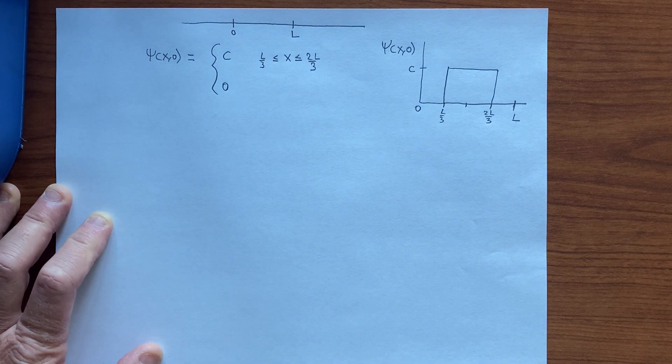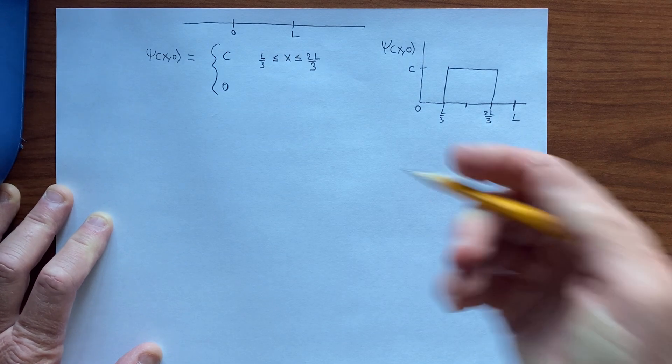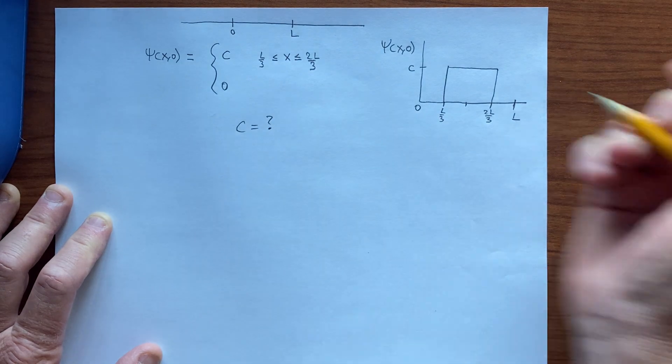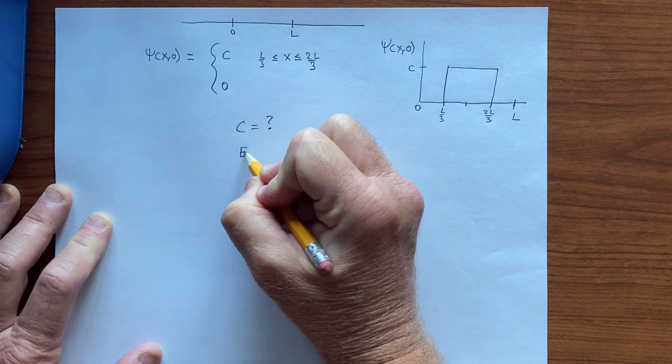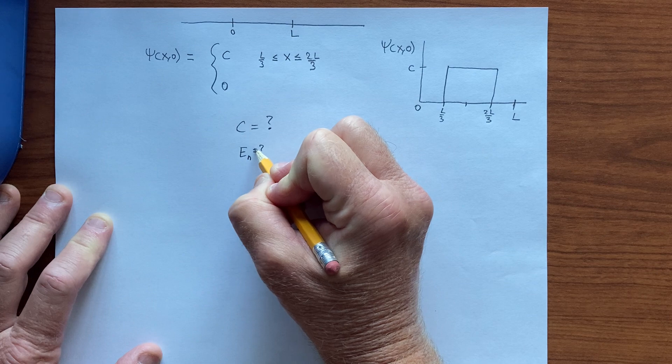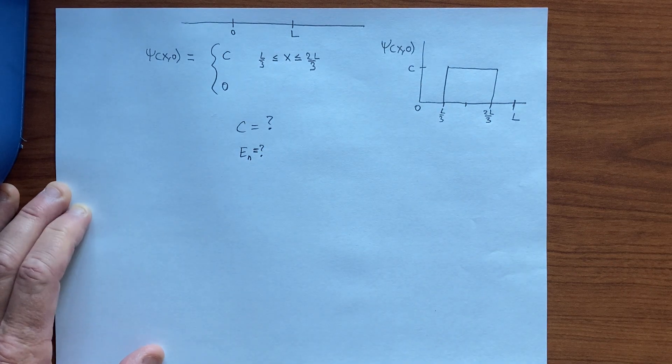Let's say we want to ask, first of all, let's find what c is, and then let's ask what possible values of energy, En, are possible if we make a measurement of the energy of the system.